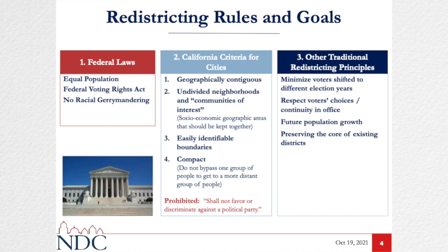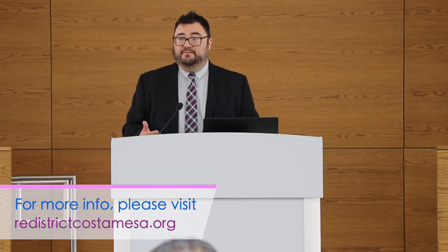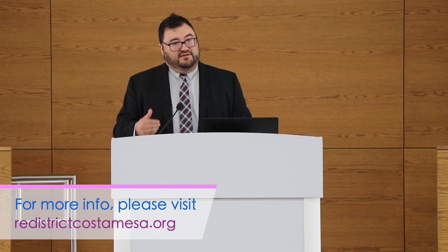And finally, compactness. The law defines compactness as not bypassing one group of people to get a more distant group of people. This is aimed at fingers or hooks or odd shapes, often designed to get a particular census block — maybe because a challenger or an incumbent lives there. Districts should make sense. They are rank ordered, and that rank order is important: if a community doesn't have the most compact boundary or doesn't cleanly follow a boundary, we have to keep the community together first, and then we look at easily identifiable boundaries or compactness.